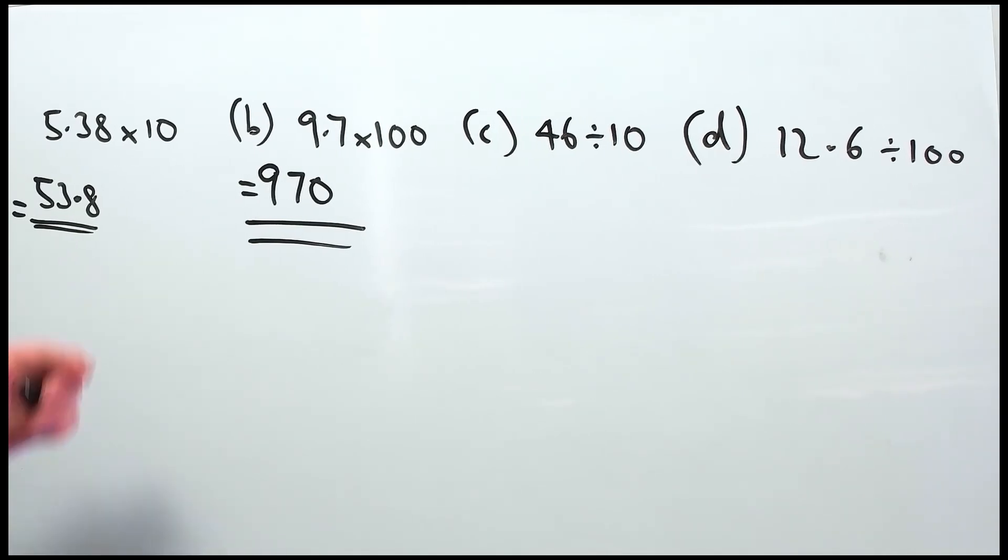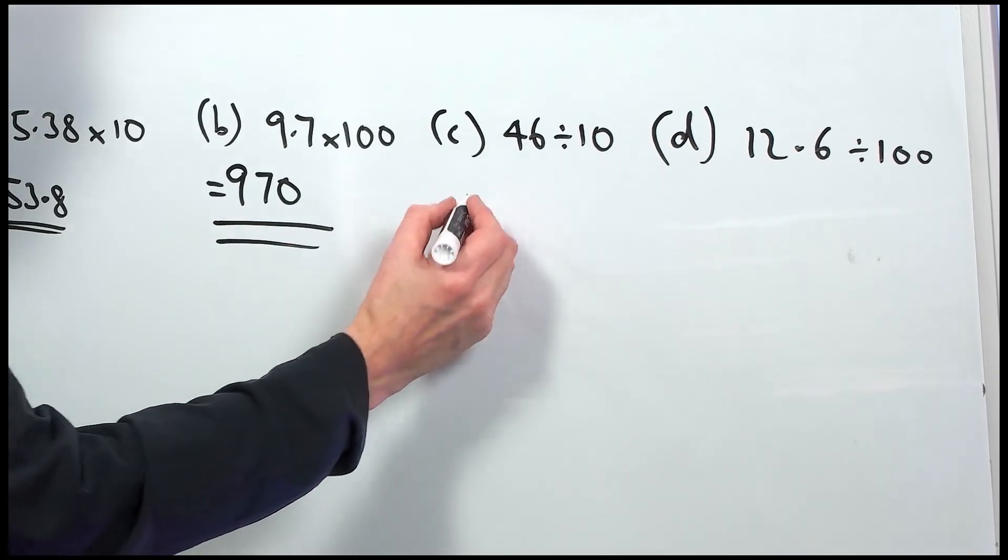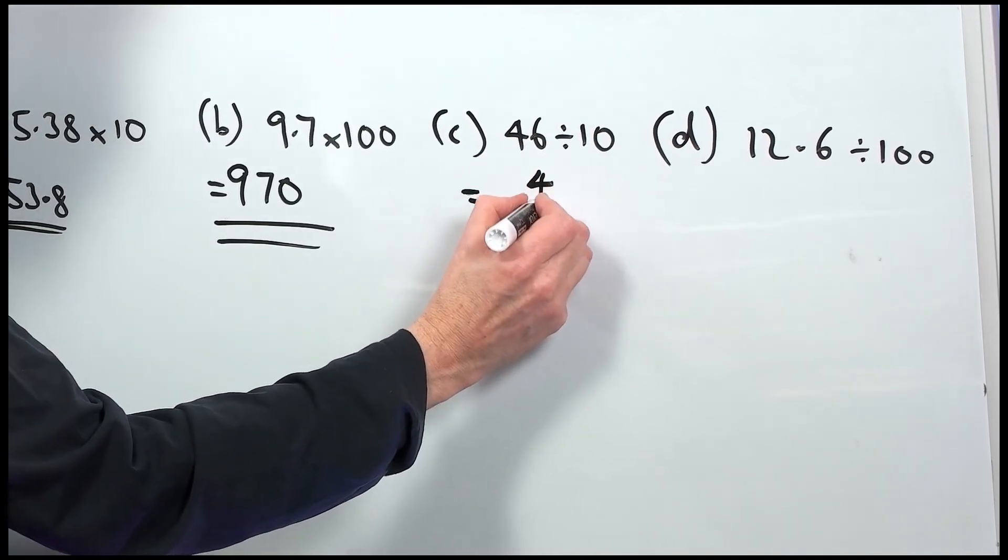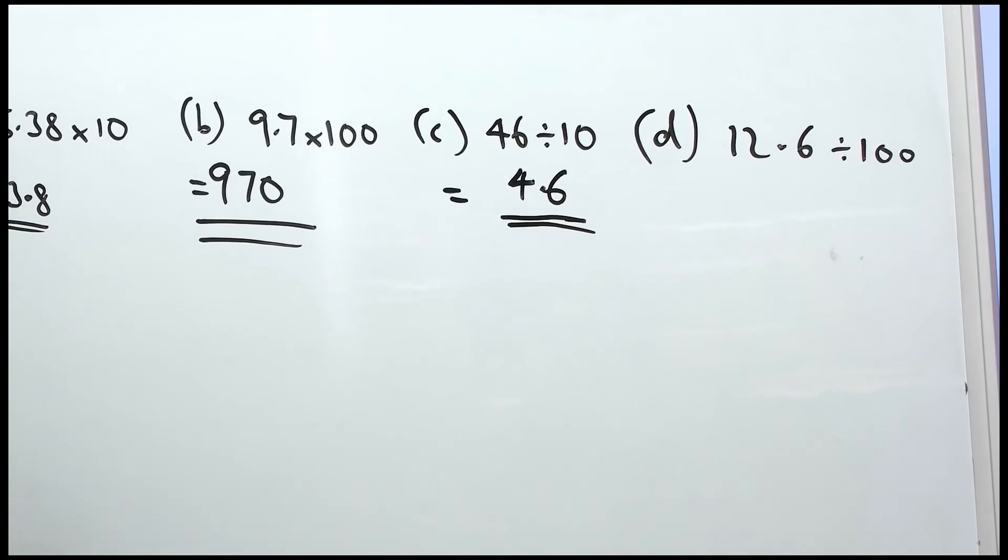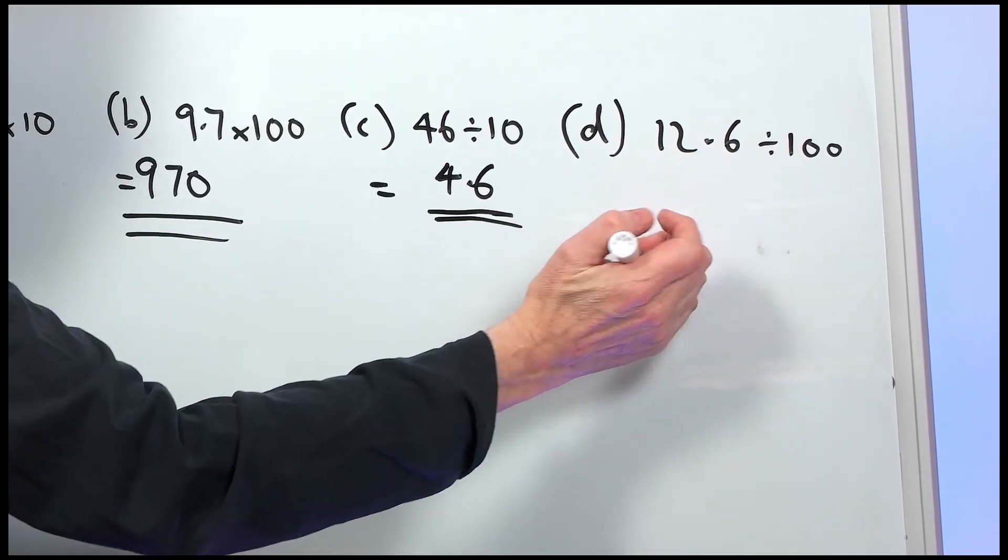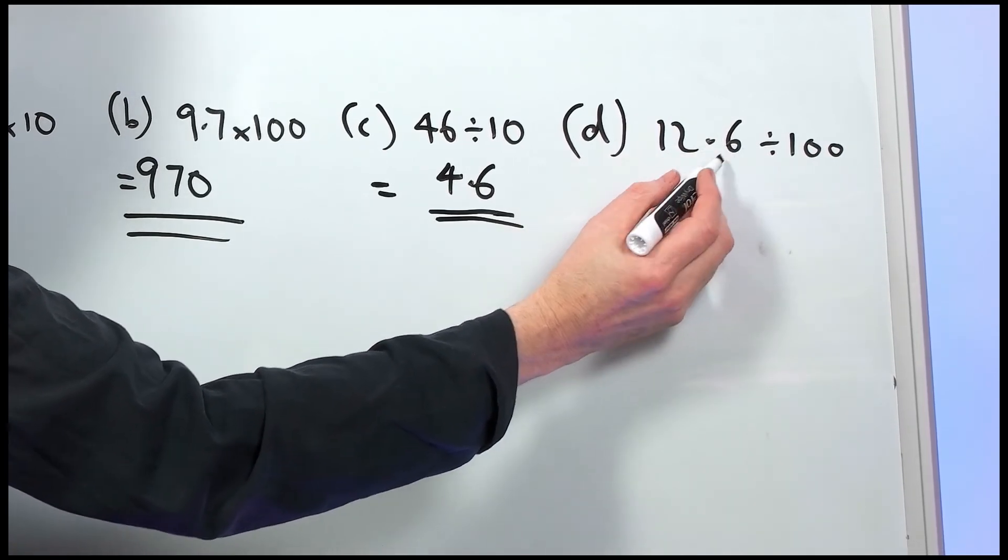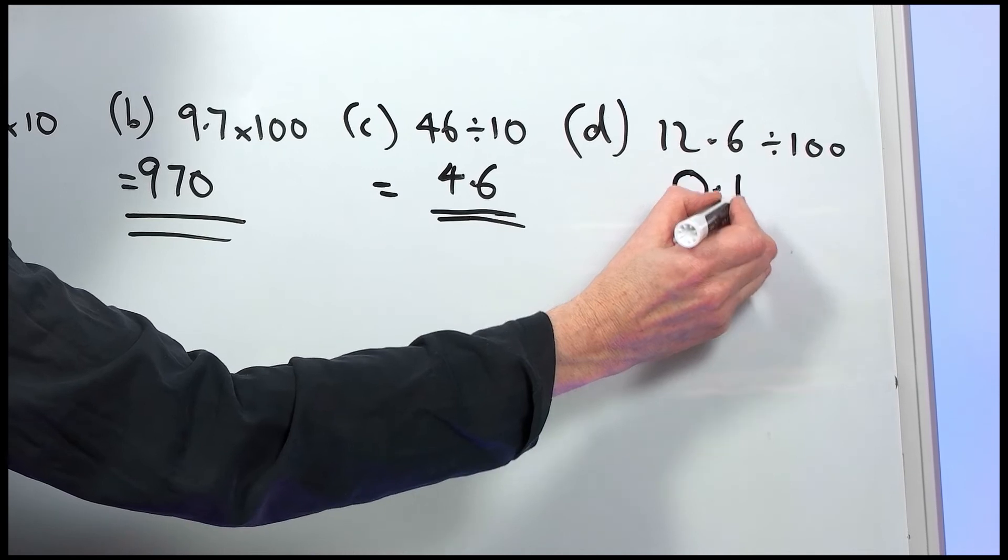Part C. Dividing by 10 makes it smaller. All the numbers are going to shift down one column. So, it goes down to 4.6. Part D. Dividing by 100, all the numbers are going to shift down two columns. So, the 10 becomes a 1, then a 0.1. So, it's 0.126.